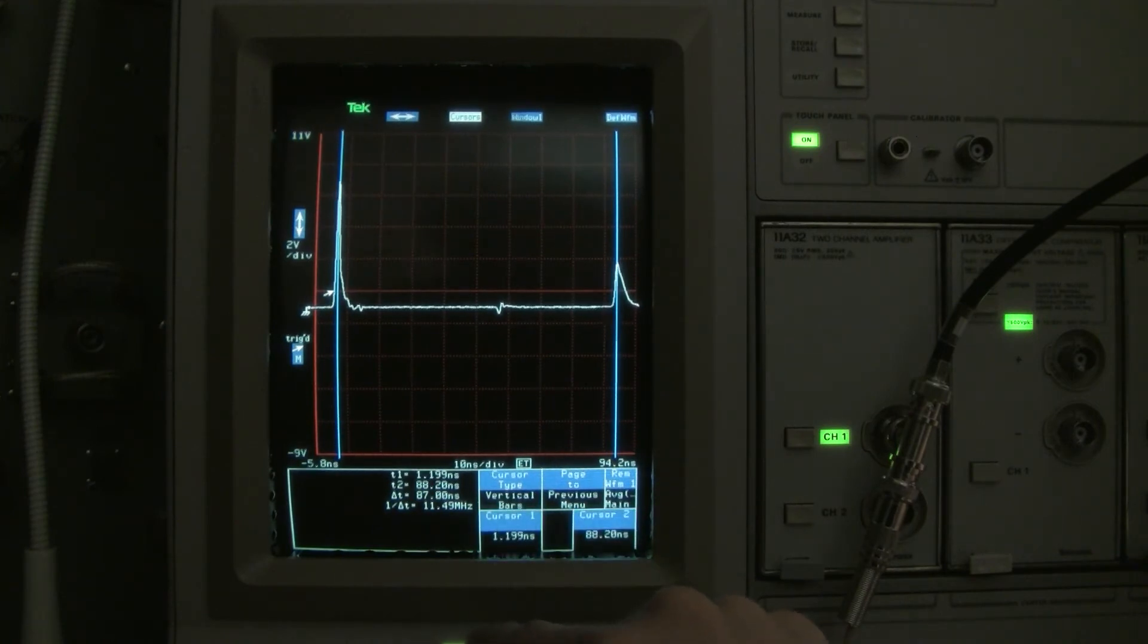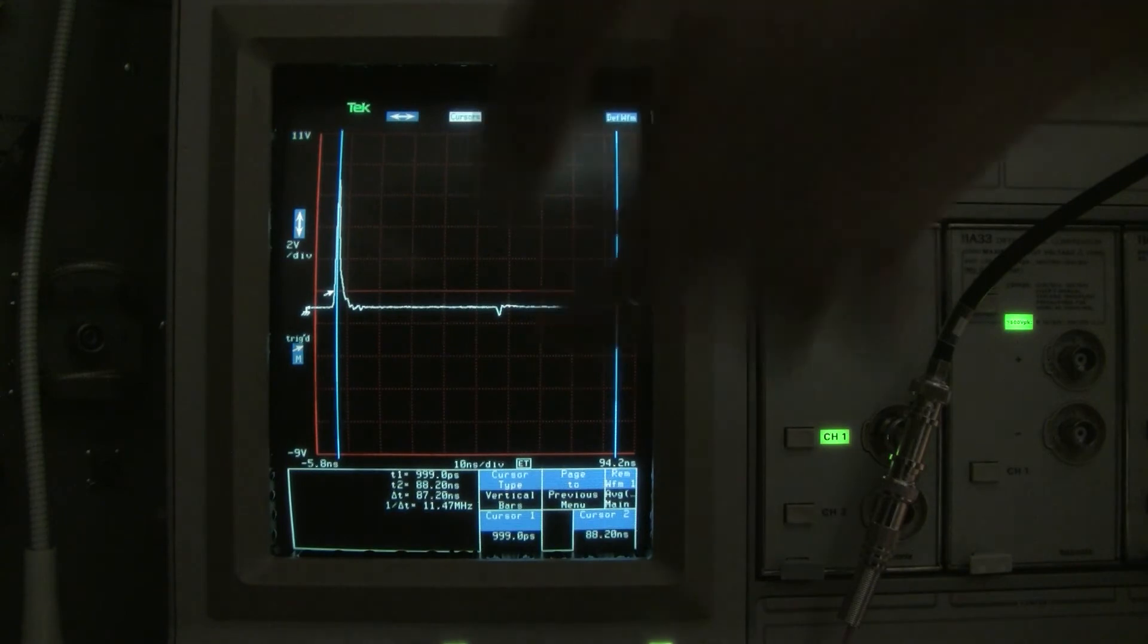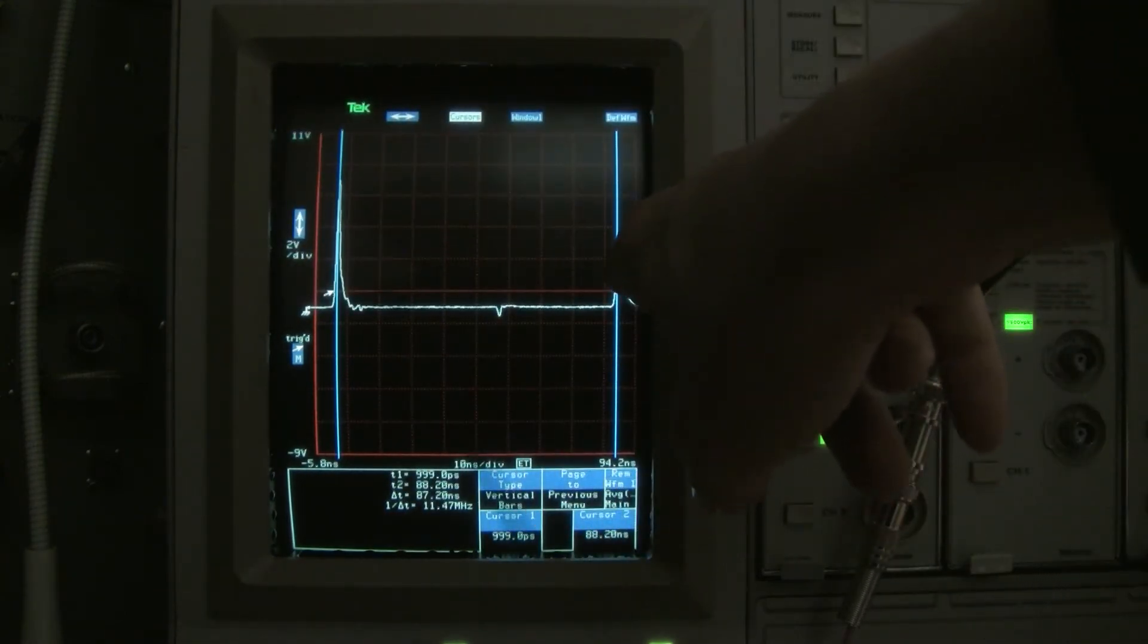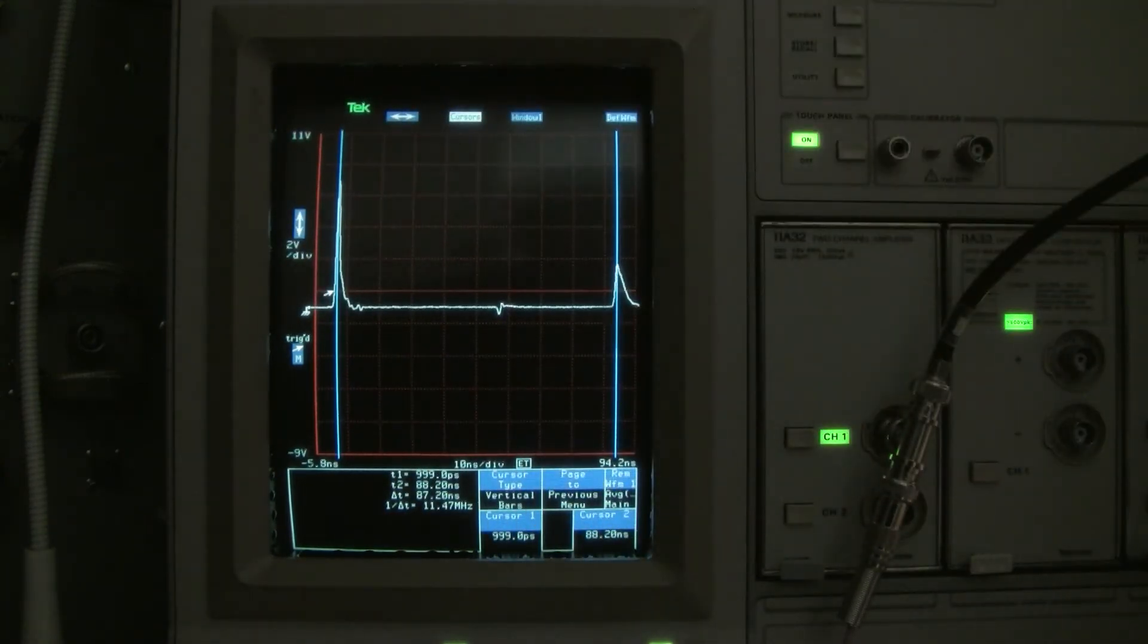And we see that we're 87.20 nanoseconds is the time, the round trip time from the TDR pulse through the barrel connector to the end of the coax and back again. So that's the entire length of our coax is 87.20 nanoseconds divided by 2 which will give us the one way time.